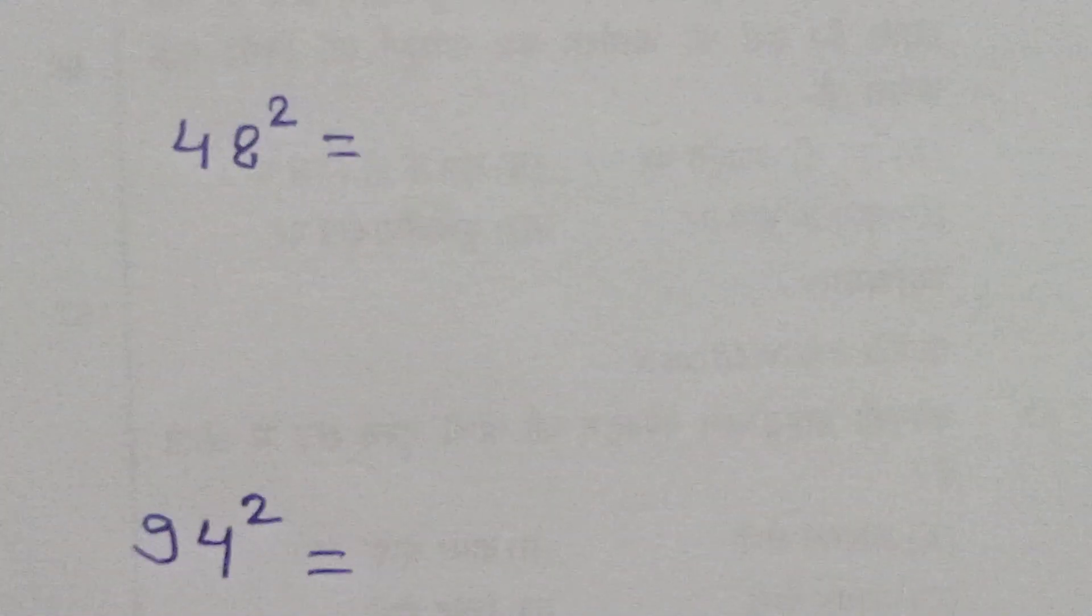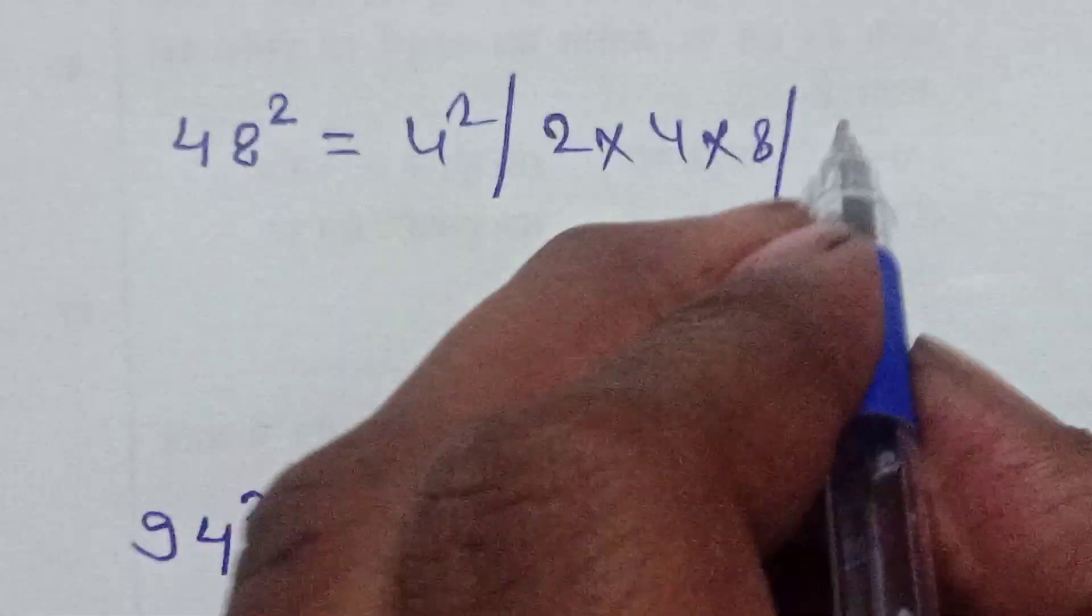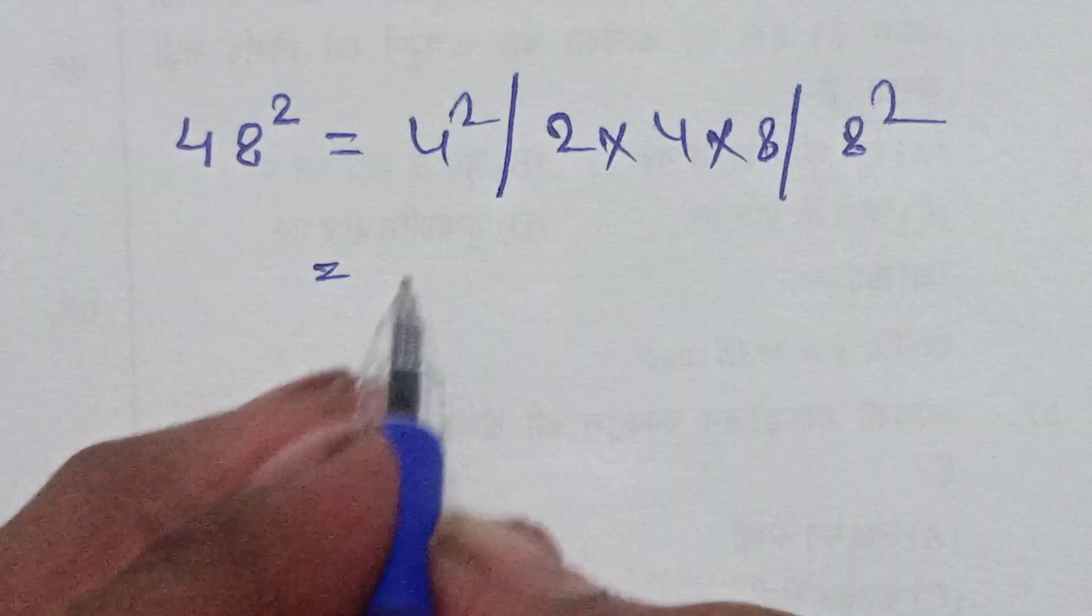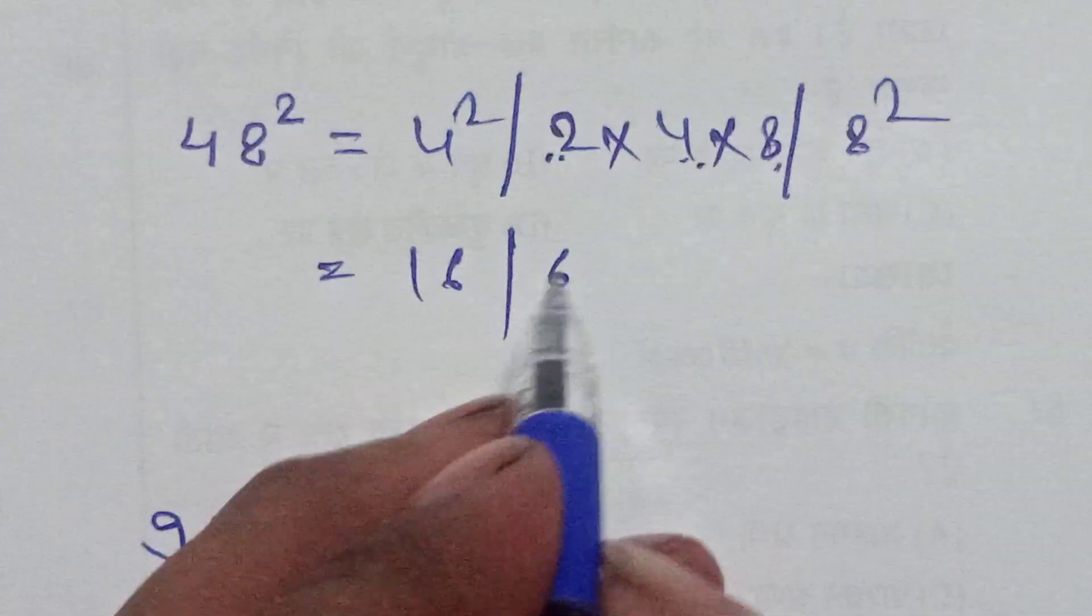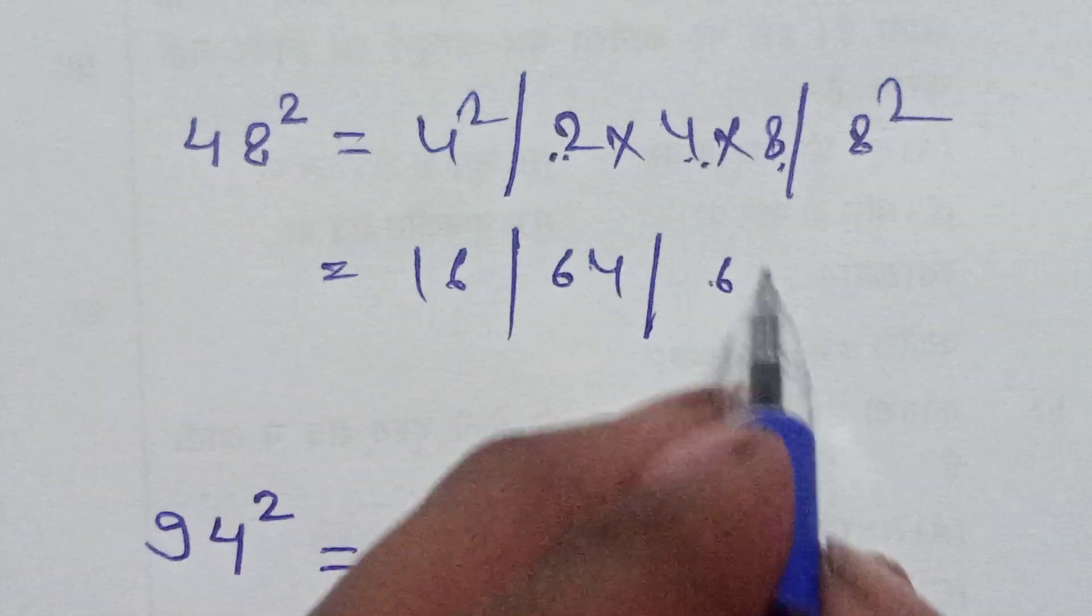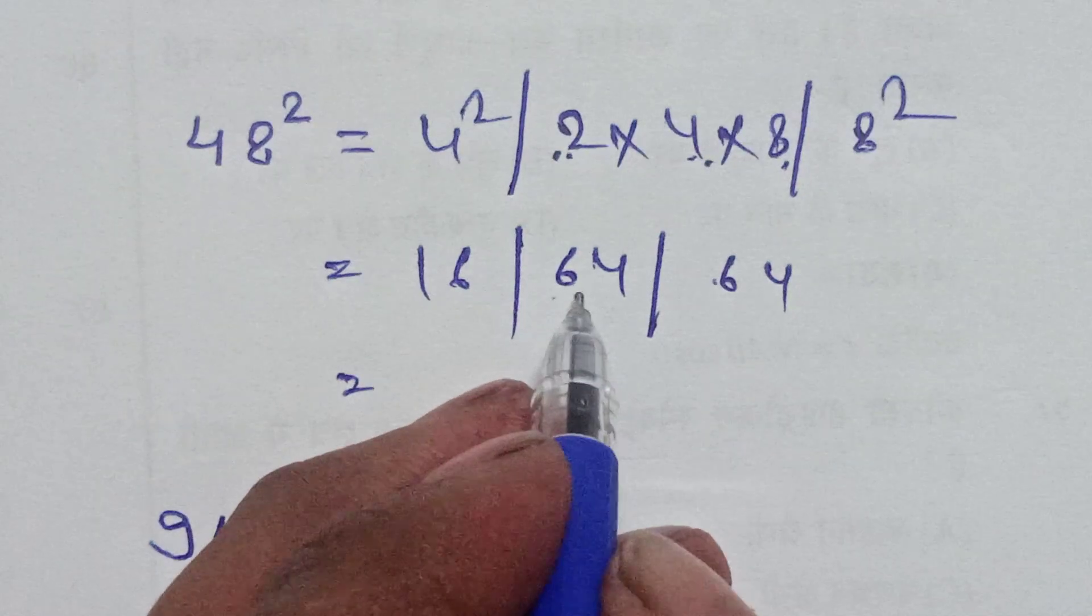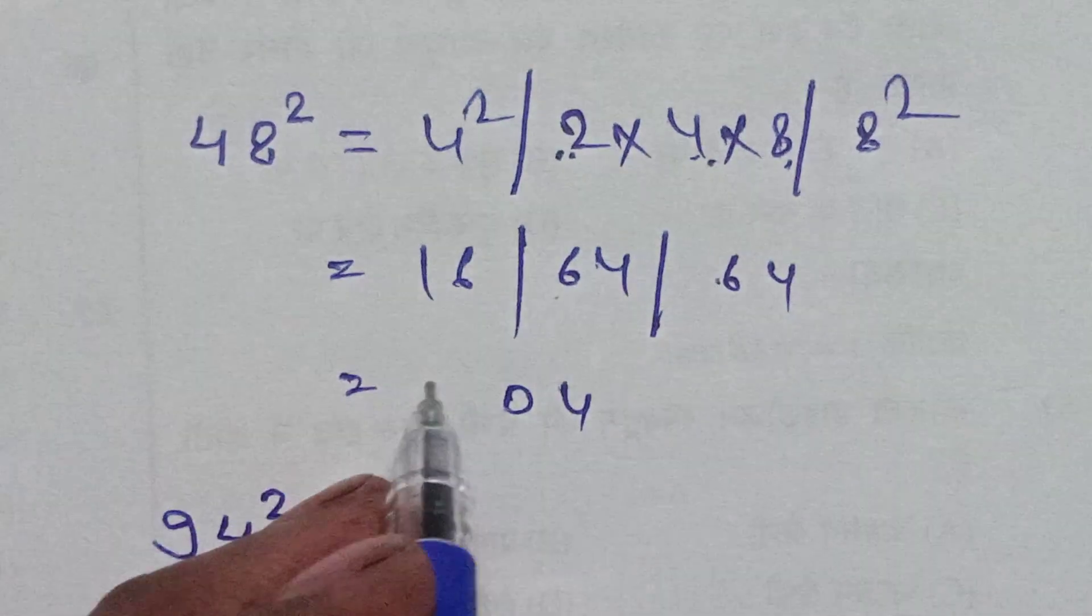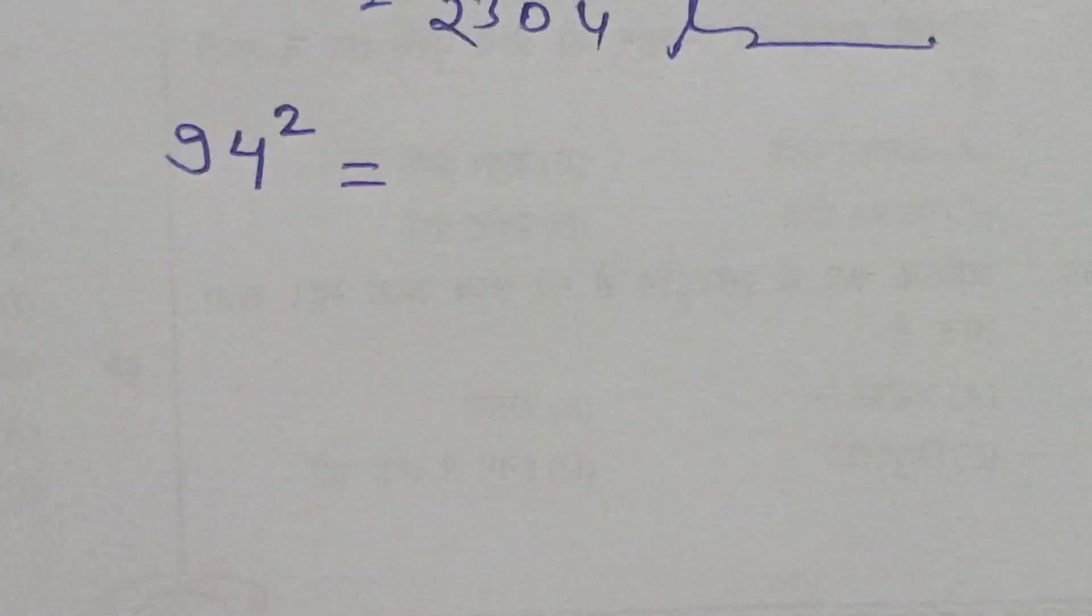Again question is 48 square. Then a square and 2ab and b square. Then a square 16, 4 times 2 times 8 is 64, 8 square is 64. Then writing answer 4, 4 add 4 is 8, 8 add 8 is 16, 16 add 6 is 22, 2 add 1 is 3. Answer is 2304.